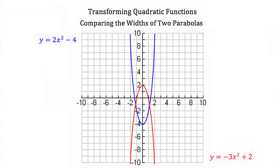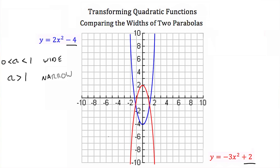Now let's talk about comparing the widths of two parabolas. Here we have y equals 2x squared minus 4 in blue and y equals negative 3x squared plus 2 in red. If we wanted to compare the widths of these two parabolas — they appear to be the same width, but are they? They have the same axis of symmetry but different vertices because they've been translated vertically. Remember, multiplying x squared by a number between 0 and 1 makes our parabola wider, and multiplying by a number greater than 1 makes it narrow. When we have a negative number, that just changes the direction of our parabola.